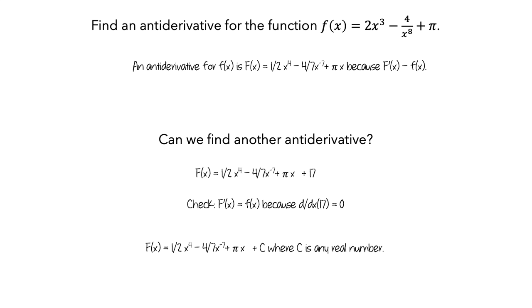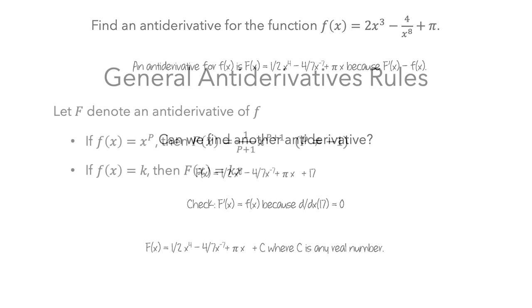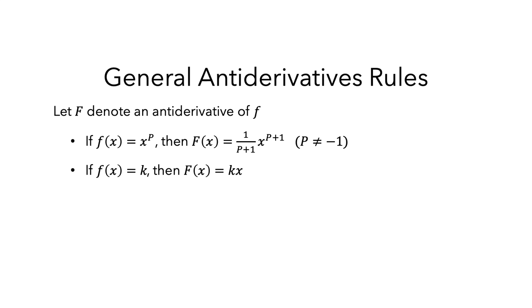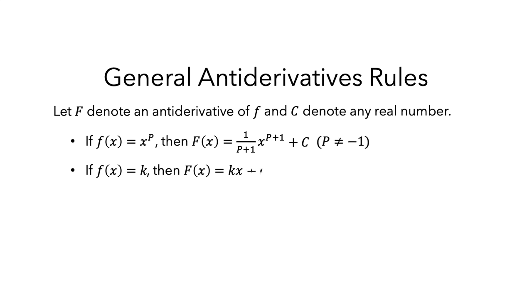This leads to some adjustments to our antiderivative rules. Let capital F denote an antiderivative and c denote any real number. To each of the formulas, we now add a plus c, creating a more general antiderivative. Both of these rules work because if you differentiate capital F, even with a plus c, you get little f.